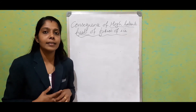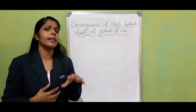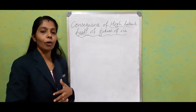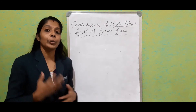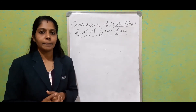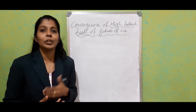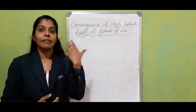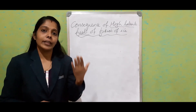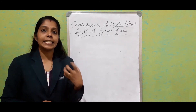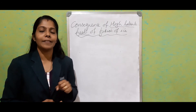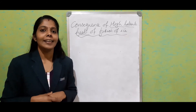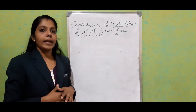During summer, dogs always keep their tongue out. This is a mechanism used by dogs to maintain their body temperature. They produce a large amount of saliva, and when they keep their tongue out, the saliva starts evaporating into the atmosphere. For that evaporation, heat energy is absorbed from the body of the dog itself, which reduces their body temperature and helps them cope with the summer heat.